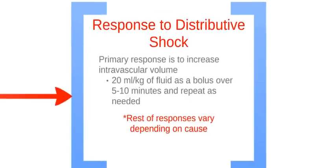The primary response to distributive shock is to increase intravascular volume. Administer boluses of 20 milliliters per kilogram of fluid over 5 to 10 minutes and repeat as necessary. The remaining responses vary depending on the cause of distributive shock.